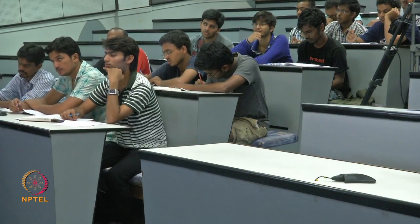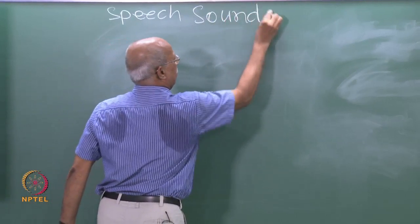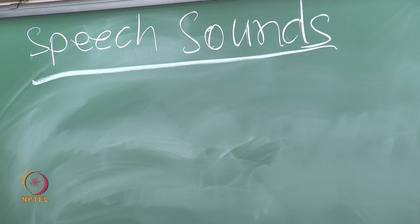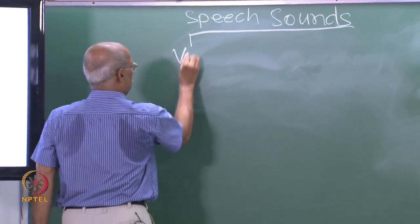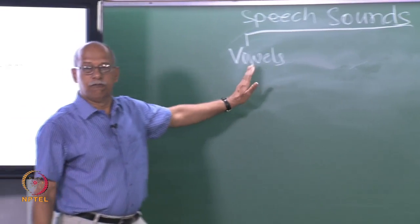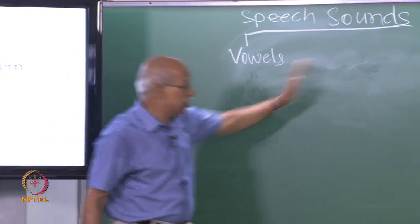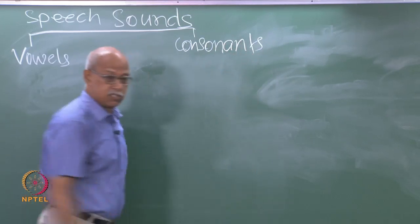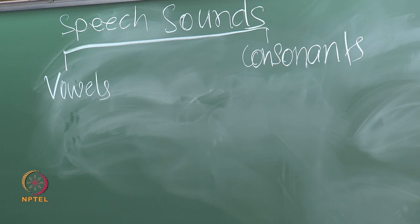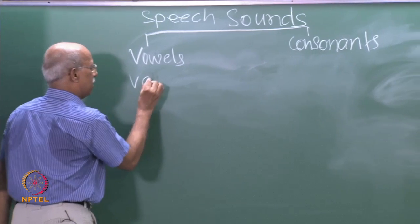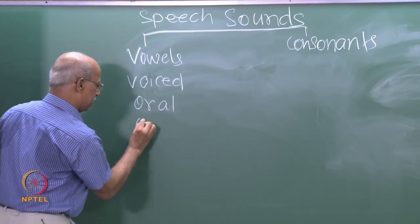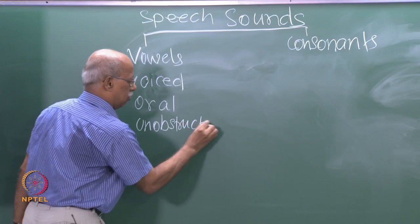All speech sounds of all natural languages can be classified into two major categories. One is vowels — and we saw that vowels are voiced, oral, unobstructed. Therefore, can you give the definition of consonants? Consonants may or may not be voiced. They are not necessarily voiced, not necessarily oral, and not necessarily unobstructed.